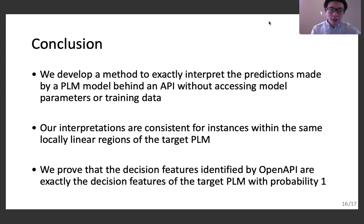In summary, we develop a method to exactly interpret the predictions made by a piecewise linear model behind an API without accessing model parameters or training data. Our interpretations are consistent for instances within the same locally linear regions of the target model. We prove that the decision features identified by our method are exactly the decision features of the target model with probability 1. Thank you very much for listening. Please feel free to ask questions.